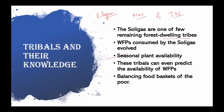These tribals can even predict the availability of wild food plants with respect to micro-climatic changes, indicating a long-term intimate knowledge of their surroundings. In addition to their role in balancing the food baskets of the poor, these wild food plants play a very important role in maintaining nutritional and livelihood security for forest communities during periods of drought and scarcity.